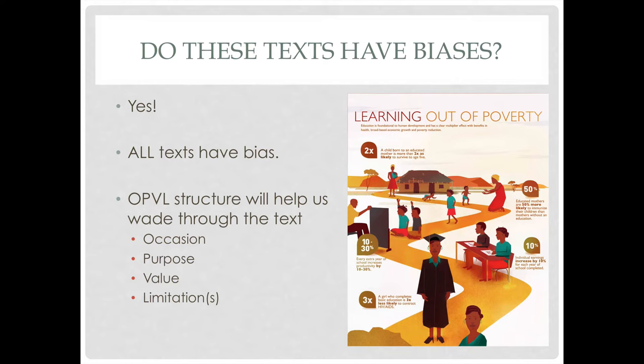Something to keep in mind as we get into this is: do these texts have biases? The short answer is yes — all texts have a bias. We do have other podcasts on things like the OPVL structure or the CRAAP test, which are structures we as readers can use to apply to these texts, to pick them apart and look at where they're coming from, who created them, why they created them, what their purpose was, and therefore what bias each text has.